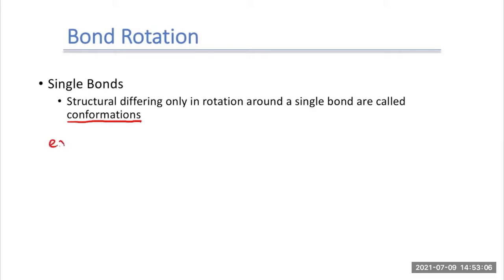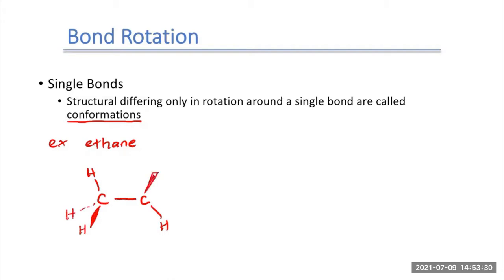As an example, let's say we have ethane. If I were to draw a 3D structure for ethane, we have hydrogens coming out, a hydrogen going back, another hydrogen coming out, another hydrogen going back. I can draw a structure like this. Or if we want, I can rotate around that single bond. And when I rotate around that single bond, we can end up with a slightly different structure.